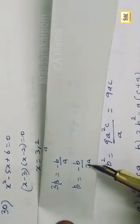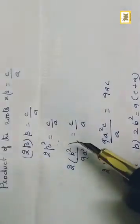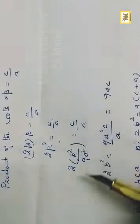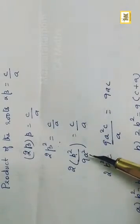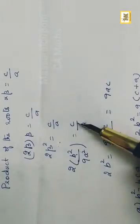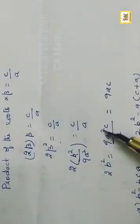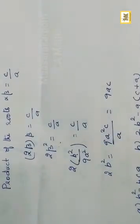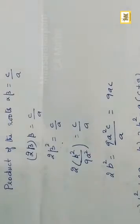Product of roots condition: alpha·beta = c/a. Substituting beta = -b/(3a): product = b²/(9a²) = c/a. Therefore 2b² = 9ac.